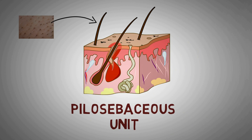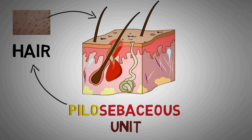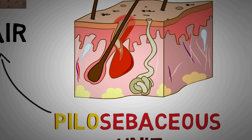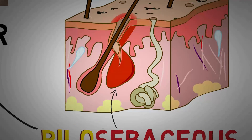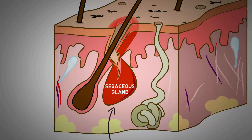Now look at the word itself — pilosebaceous. It is made up of two words: pilo meaning hair, and sebaceous because this structure also contains a sebaceous gland which is connected to the hair follicle. The sebaceous gland is a small oil-producing gland of our skin which does the job of lubrication.